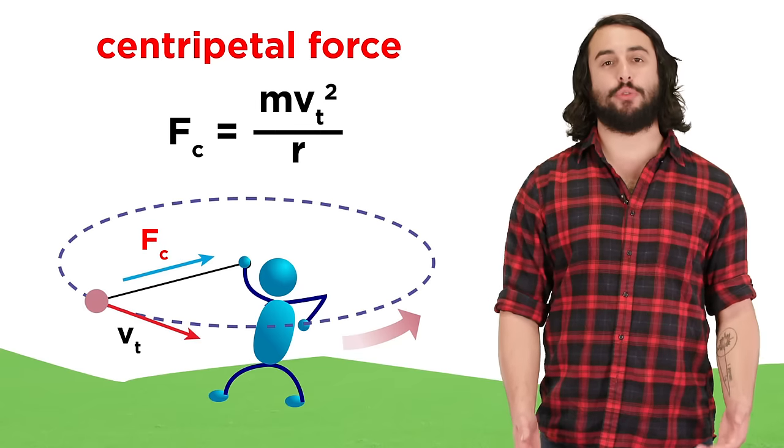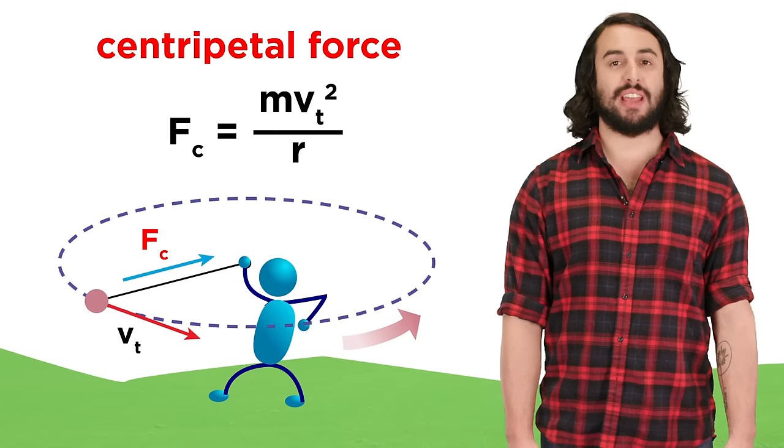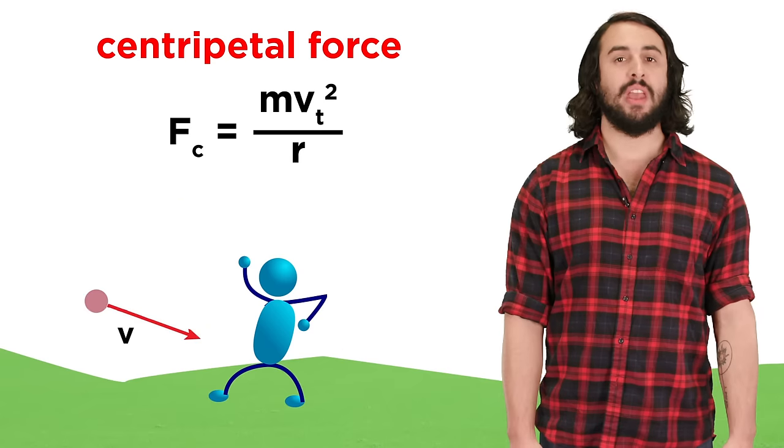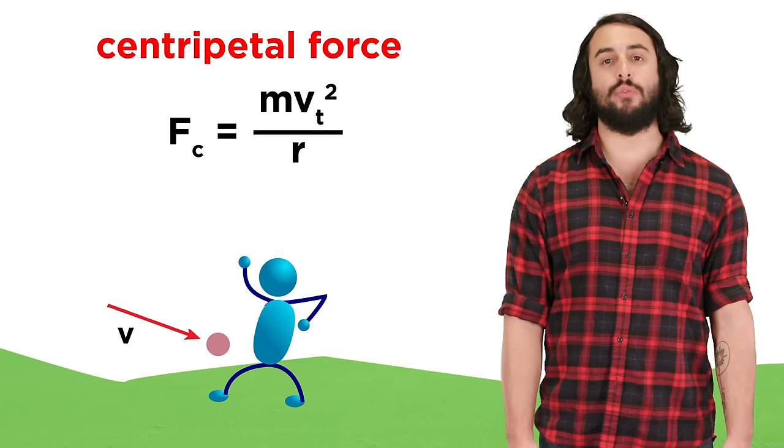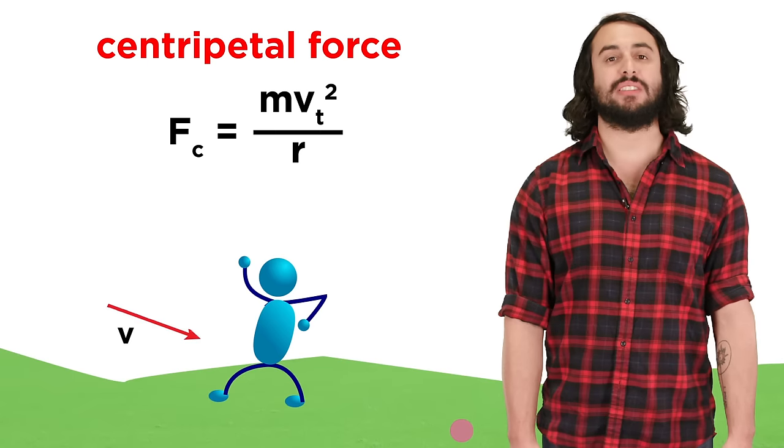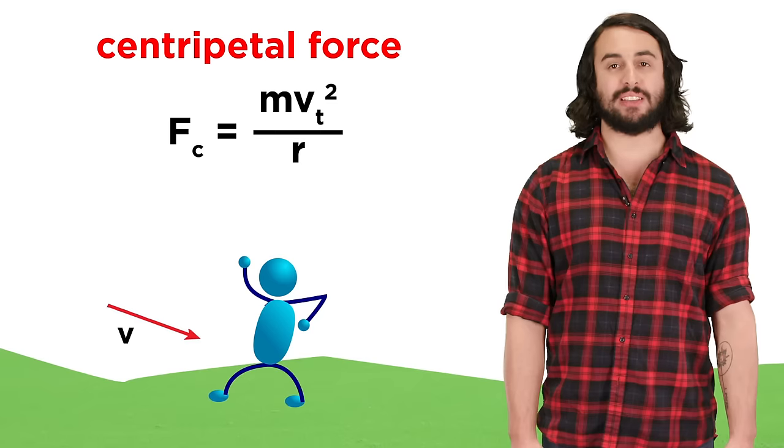If this centripetal force that points towards the center perpendicular to the tangential velocity were to suddenly vanish in the event that you were to let go of the string, then the object would simply move along the tangent line at the precise moment of release, since there would no longer be any force pulling the object towards the axis of rotation.